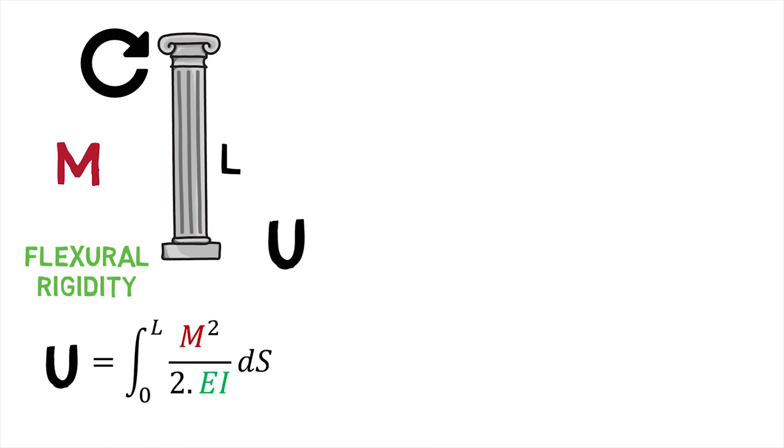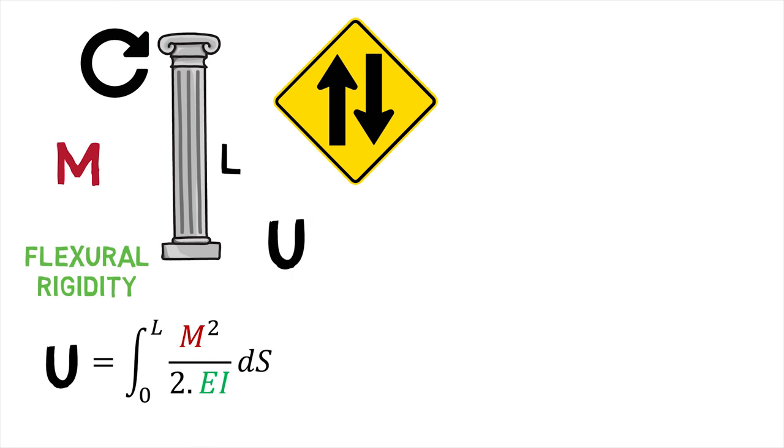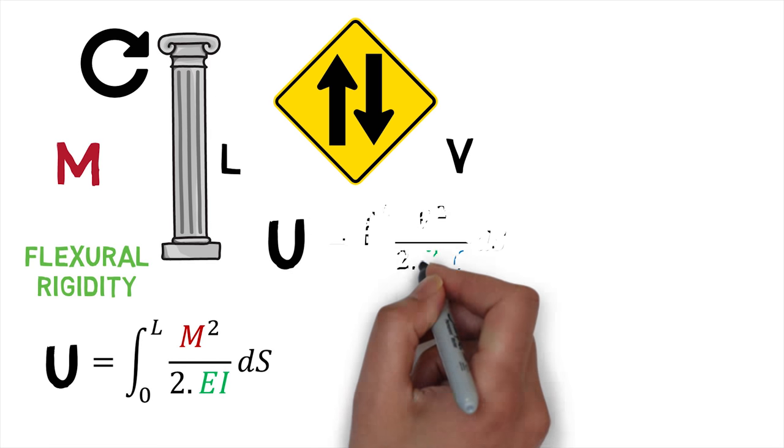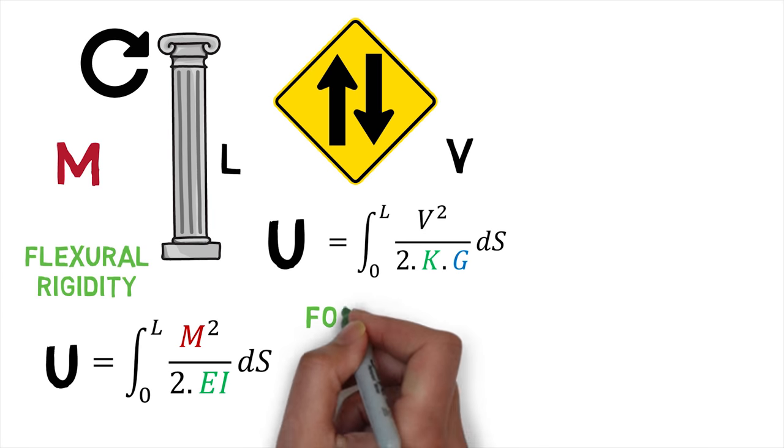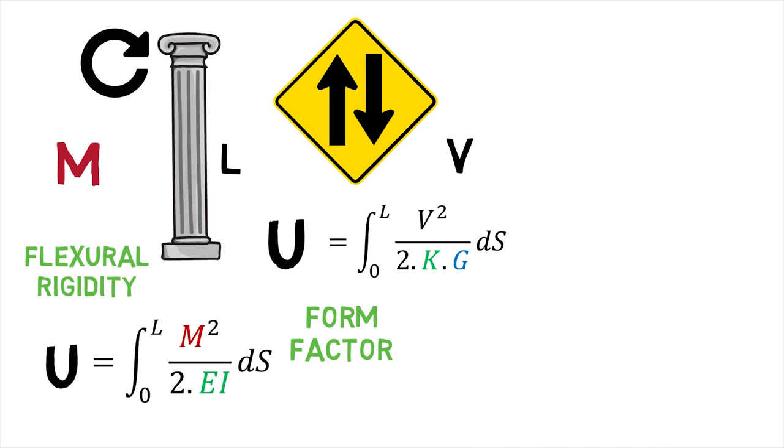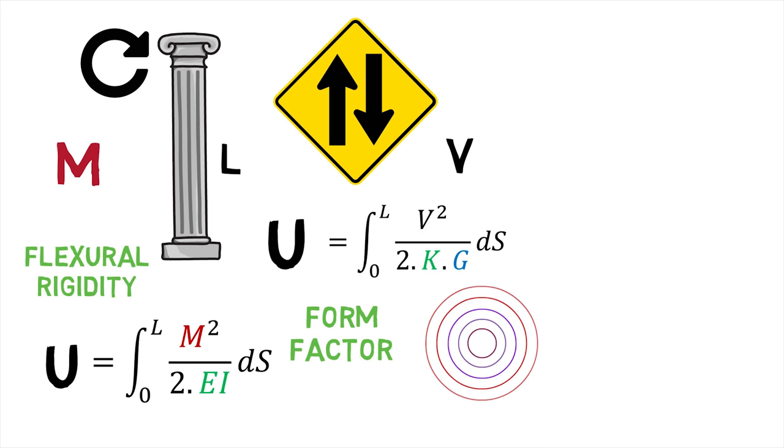Similarly, strain energy stored for a transverse shear force of magnitude V is given when the elemental length ds is integrated from 0 to L. Here, K is the form factor which is dependent on the cross section of the beam and G is the modulus of elasticity.